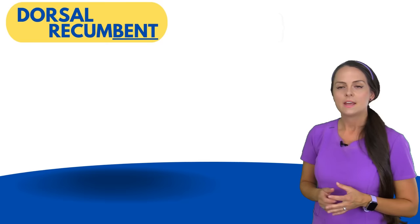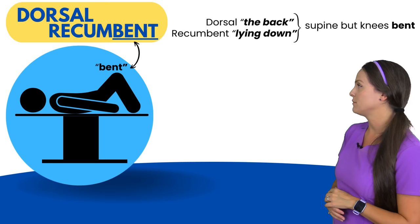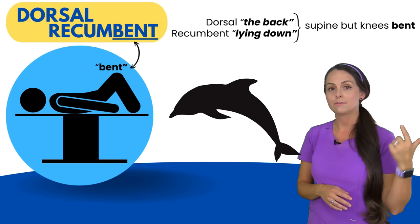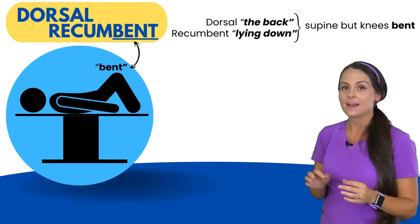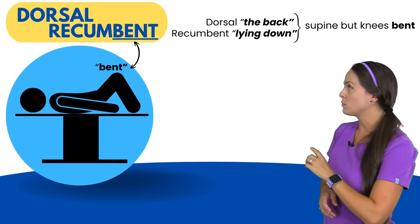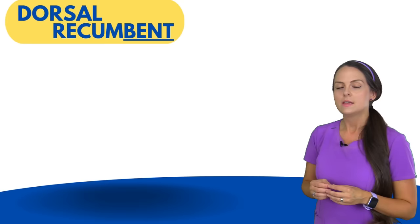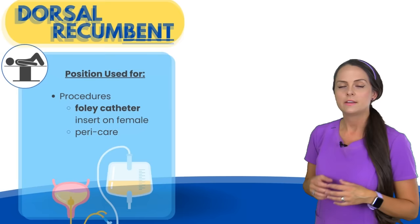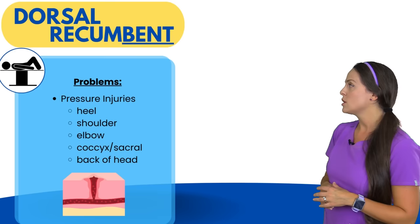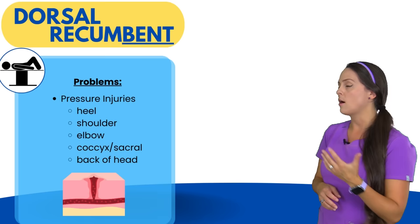Next is the dorsal recumbent position. The patient is lying on their back but with knees flexed. The word 'dorsal' means back — think of a dolphin's dorsal fin on their back — and 'recumbent' means lying down. The word 'recumbent' also contains 'bent,' referring to the bent knees. This position is used for many procedures, including Foley catheter insertion on female patients and providing perineal care. Pressure injury risks include the heels, shoulders, elbows, coccyx/sacral area, and back of the head.